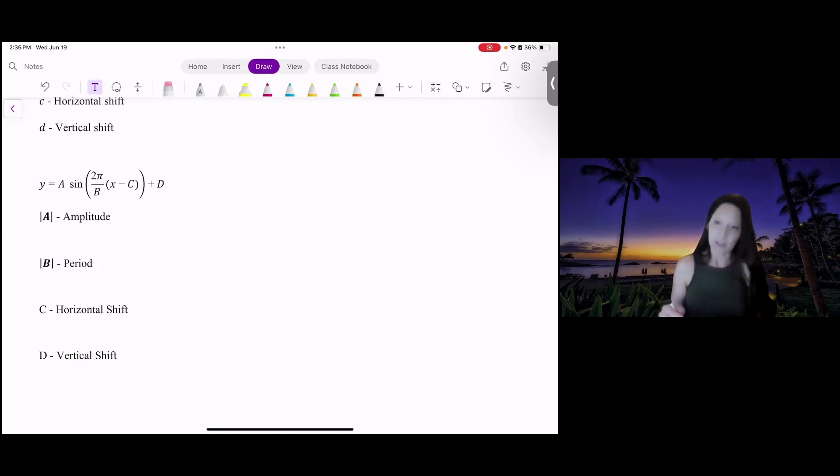Notice the way it's written. It's not just bx. We have 2 pi over b. That helps us with the period. Whatever number you have inside the function helps us determine the period, and we're using absolute value because we're not taking a sign. That sign is going to be a reflection. Your amplitude is going to be how much your graph is stretched vertically. Your period is how much it's stretched horizontally.